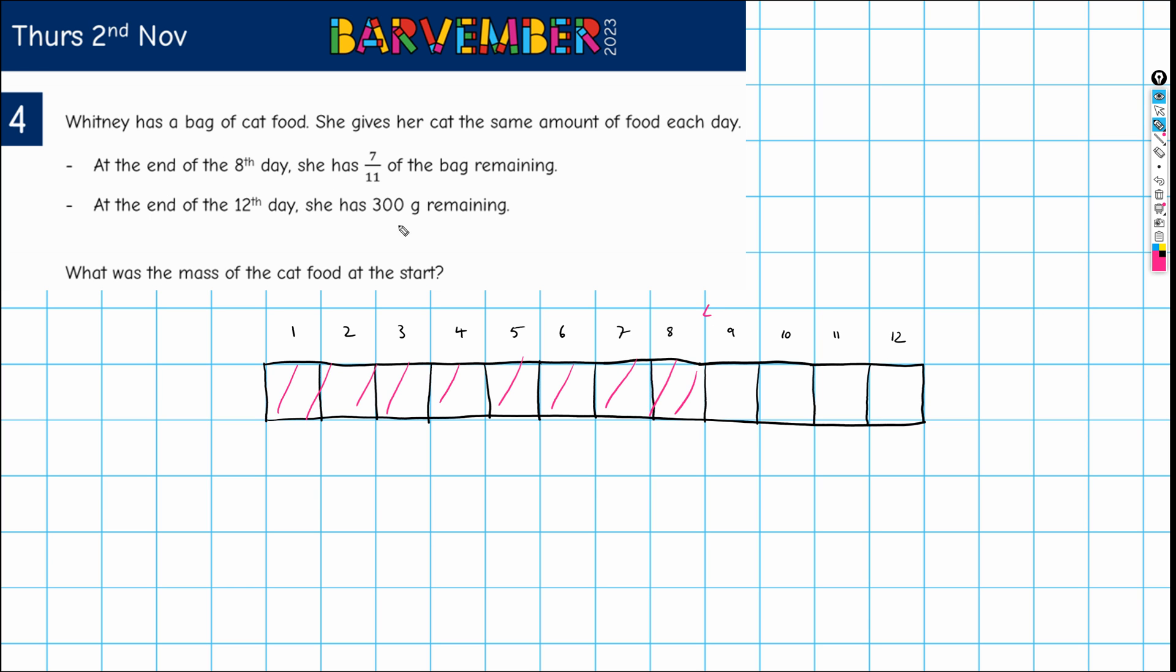Now we're also told at the end of the 12th day, she has 300 grams remaining. So this is not the end of the bag. In fact, we don't know how much bigger the bag is. This is a completely randomly sized bag. At the end of the 12th day, we know that she has 300 grams. So I'm just going to label that as the 300 grams. I know in my mind that I have no idea how big this ought to be compared to this. So I need to bear that in mind. This is a completely random size. It does not equate to these equal parts as it were here.